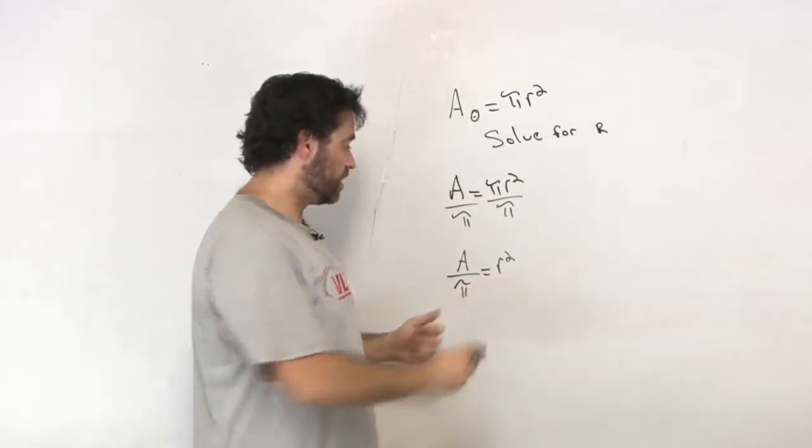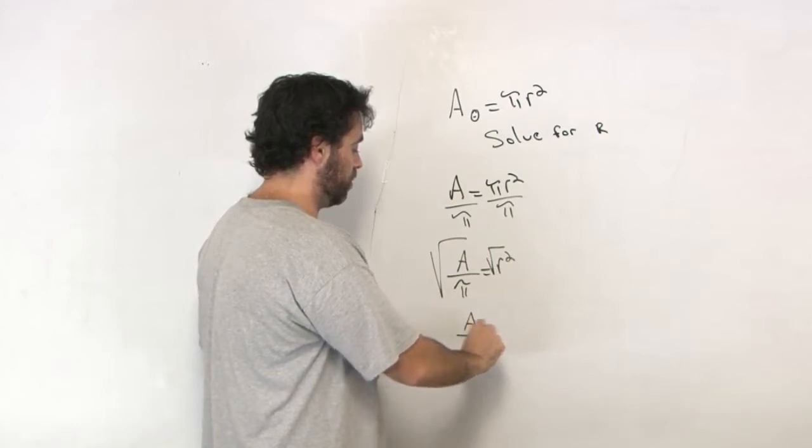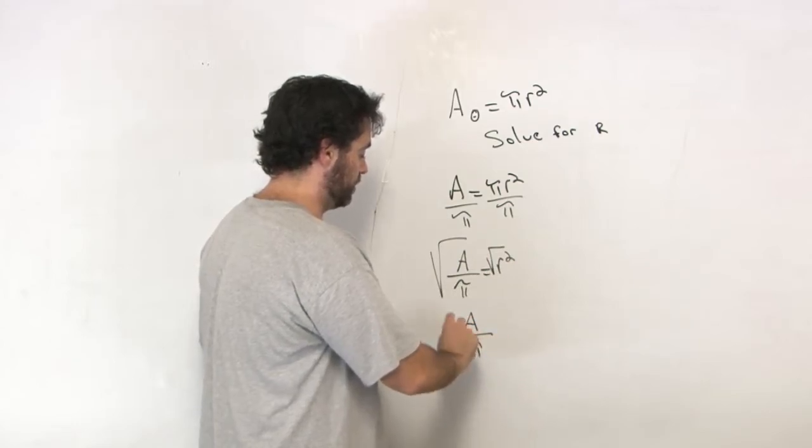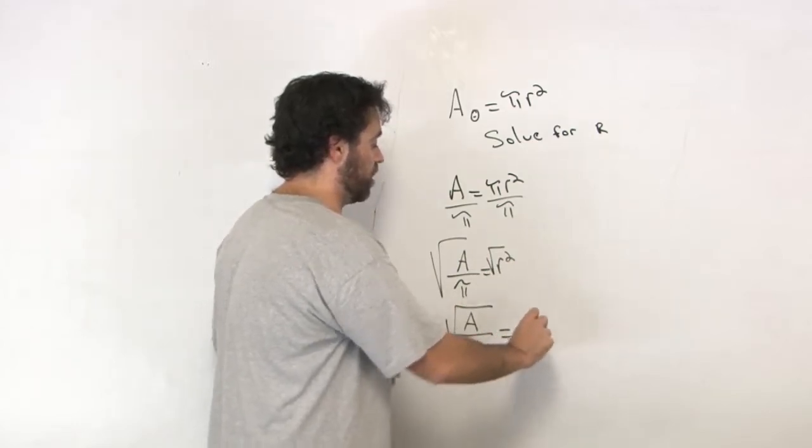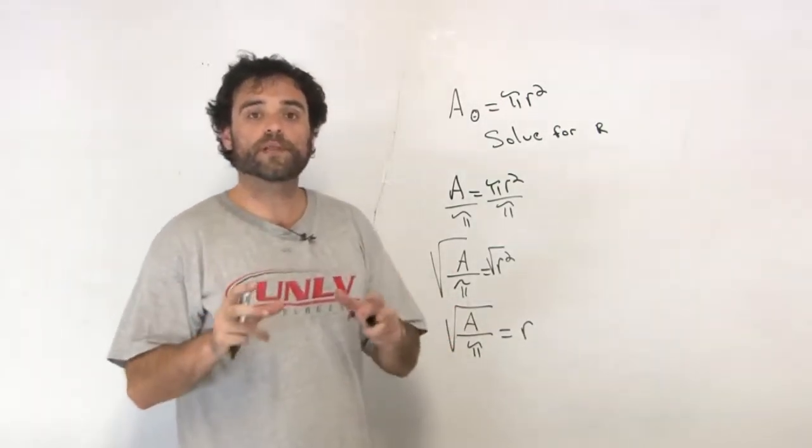How do I get rid of that r squared? I'm going to take the square root. So the square root of area over pi is equal to r. That's what we call formulas.